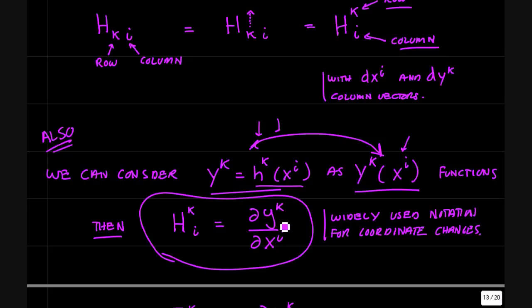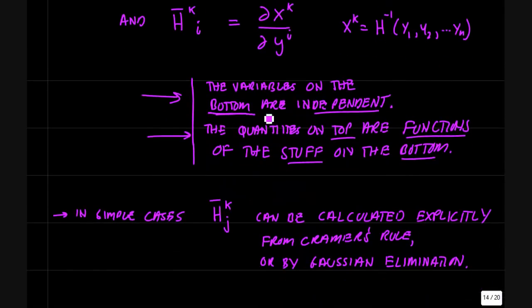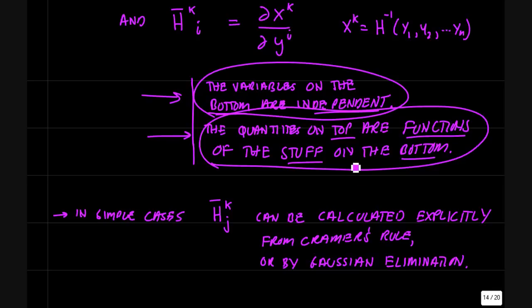So the Jacobian matrix, this h^k_i, is sometimes written just dy^k by dx^i, the derivative of the new coordinates y with respect to the old ones. When you have this type of notation, the variables on the bottom are independent and the quantities up on top are the functions of the stuff on the bottom.